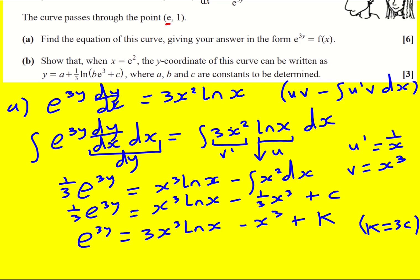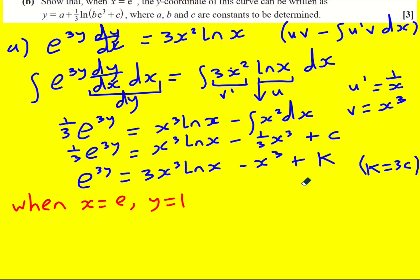The only thing I've not yet done is put in the point (e, 1) to get a particular solution. So when x equals e, y equals 1. We're going to get e to the 3 equals 3 e cubed ln e. Now ln e is just 1 so I can cross that out, minus e cubed plus k. So I'm going to get 2 e cubed, so k is going to equal minus e cubed.